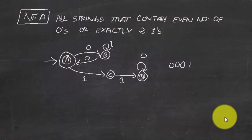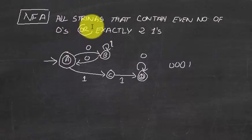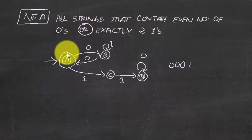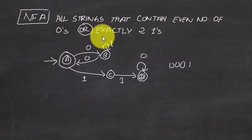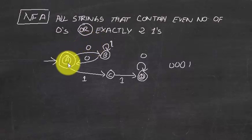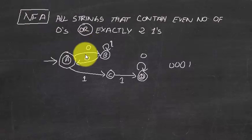The example question asks for all strings that contain an even number of zeros OR exactly two ones. The key word here is 'or' — both conditions do not have to be met simultaneously. Either condition being met is sufficient. The diagram can take two paths accordingly.